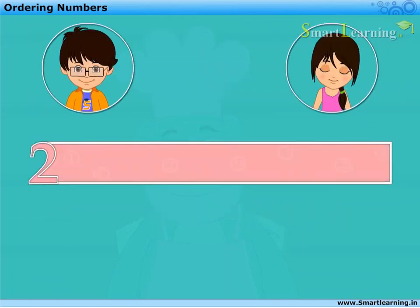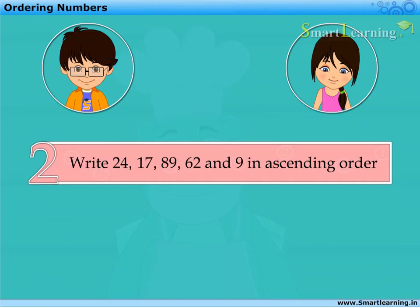Now, let us solve this example. Write 24, 17, 89, 62 and 9 in ascending order.